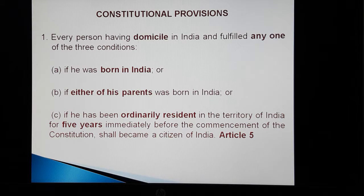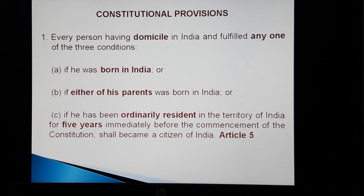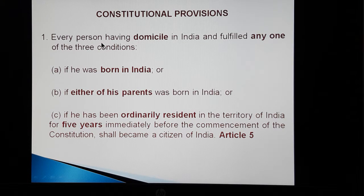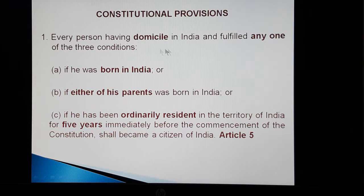Coming back to the constitutional provisions regarding citizenship — according to the constitution, on the date of its commencement, that is 26 January 1950, four categories of persons became the citizens of India. The first category is that every person having domicile in India and who fulfilled any one of three conditions could become the citizen of India. This has been prescribed under Article 5 of the constitution — any person who had domicile in India and fulfilled any one of these three conditions automatically became a citizen of India.